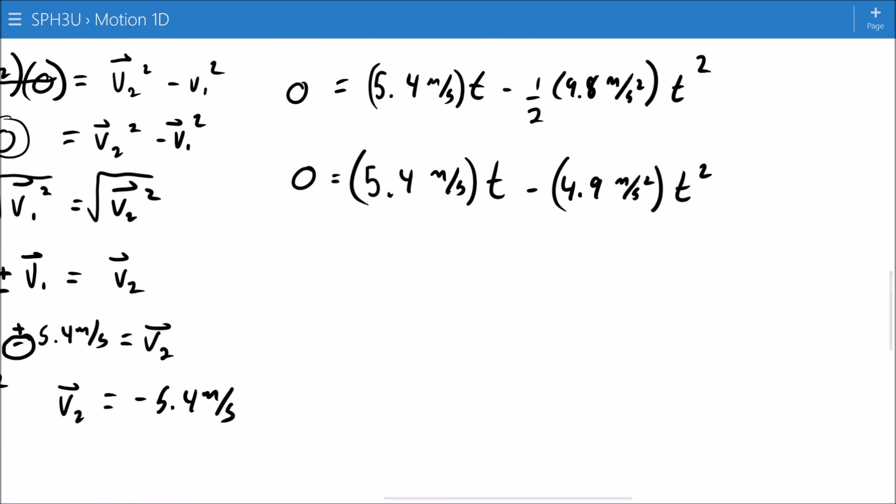Minus 4.9 meters per second squared T squared. Not totally trivial. If I really want to do this mathematically correctly, I should factor a T out at this point. And then I can recognize that solutions are T equals 0 and 5.4 meters per second minus 4.9 meters per second squared T equals 0.